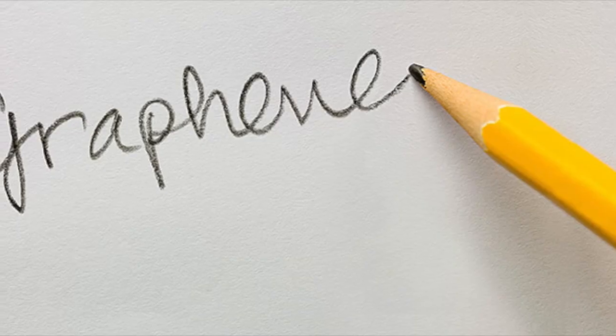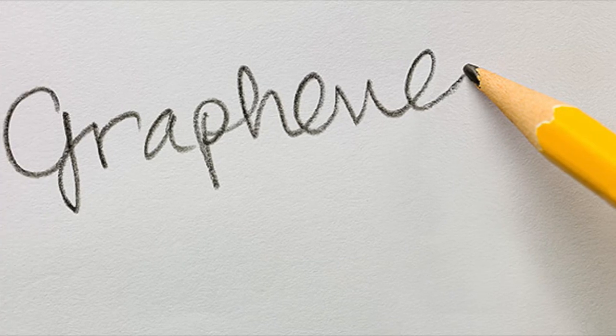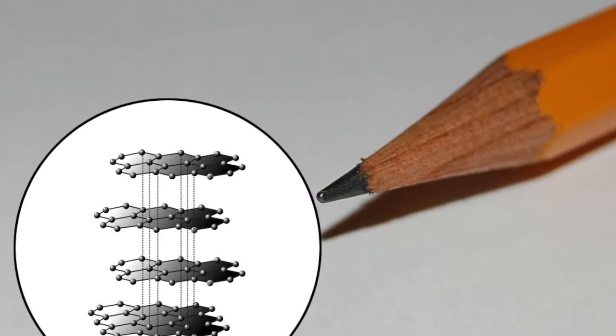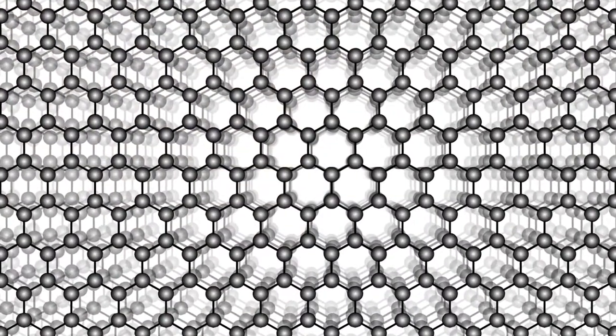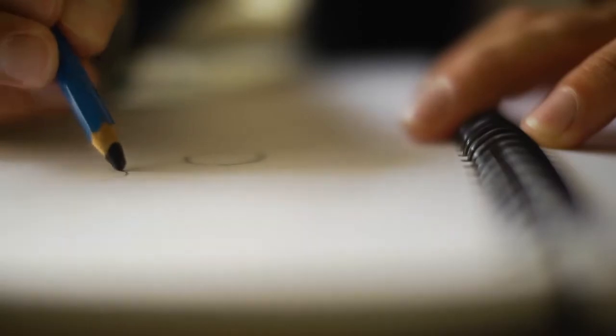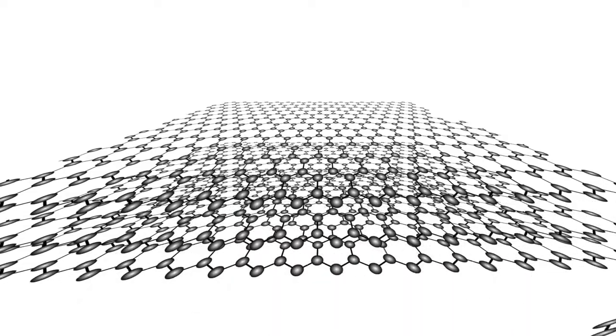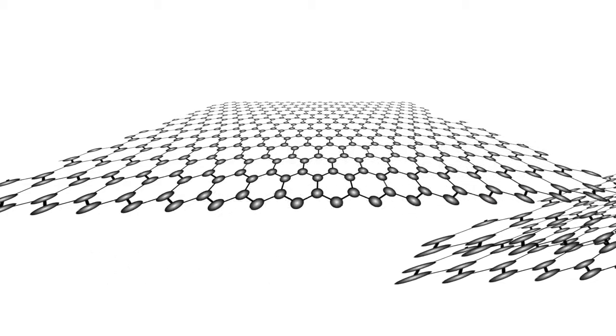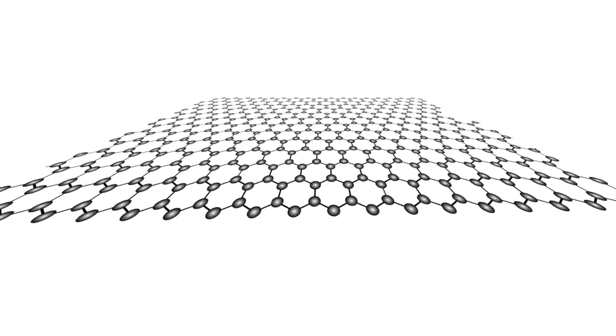If you have ever drawn with a pencil, you have probably made graphene. A pencil contains not lead but graphite which consists of sheets of carbon in hexagonal letters. When you write, layers of graphite slide from the tip of pencil and stick to the papers. Usually, many layers are stacked on top of each other but once in a while, you get a single layer of carbon atom. This is called graphene.